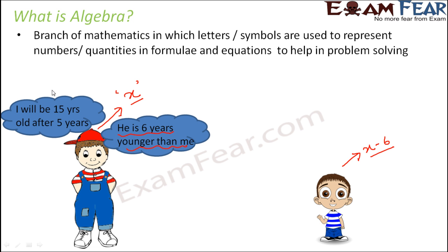So as per the question again, after five years, as per our assumption, age of the elder brother should be x plus 5. After five years his age would increase one every year. So it should be x plus 5, but in the problem it is given that his age is 15 after five years. So that means this x plus 5 is equal to 15.